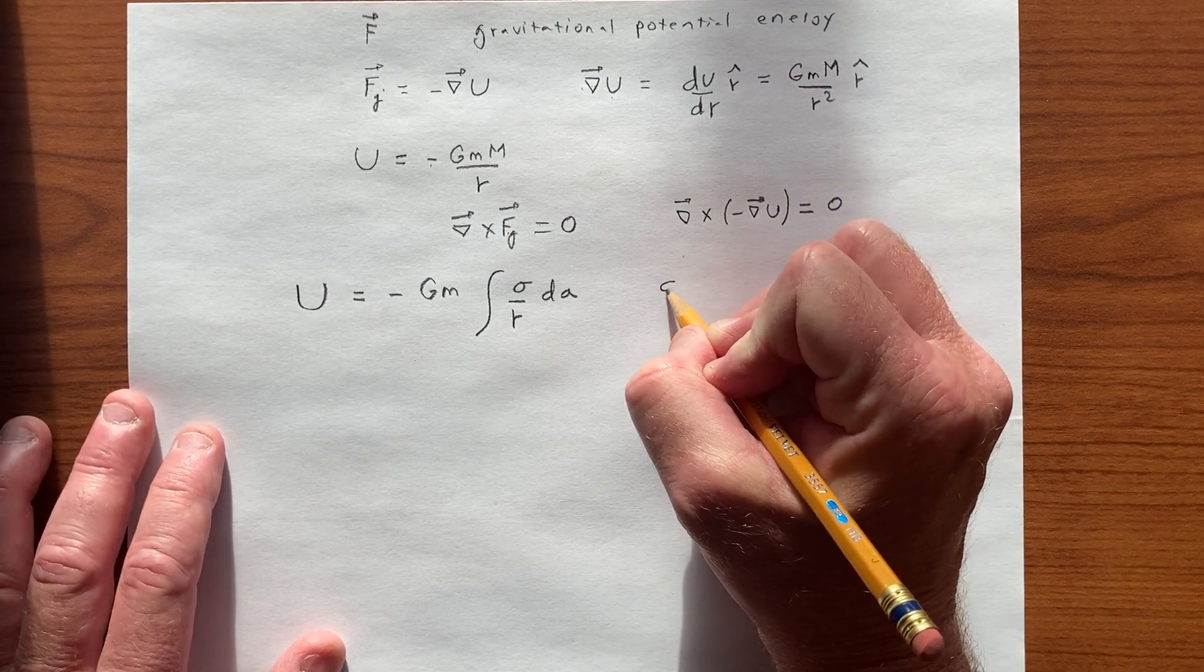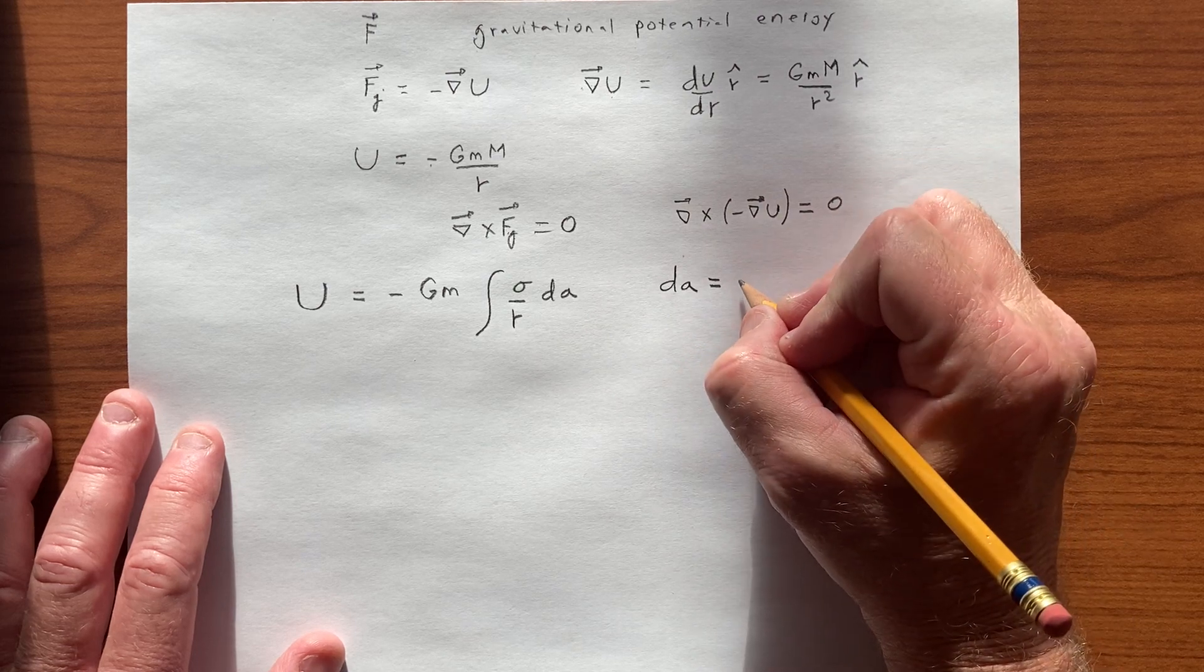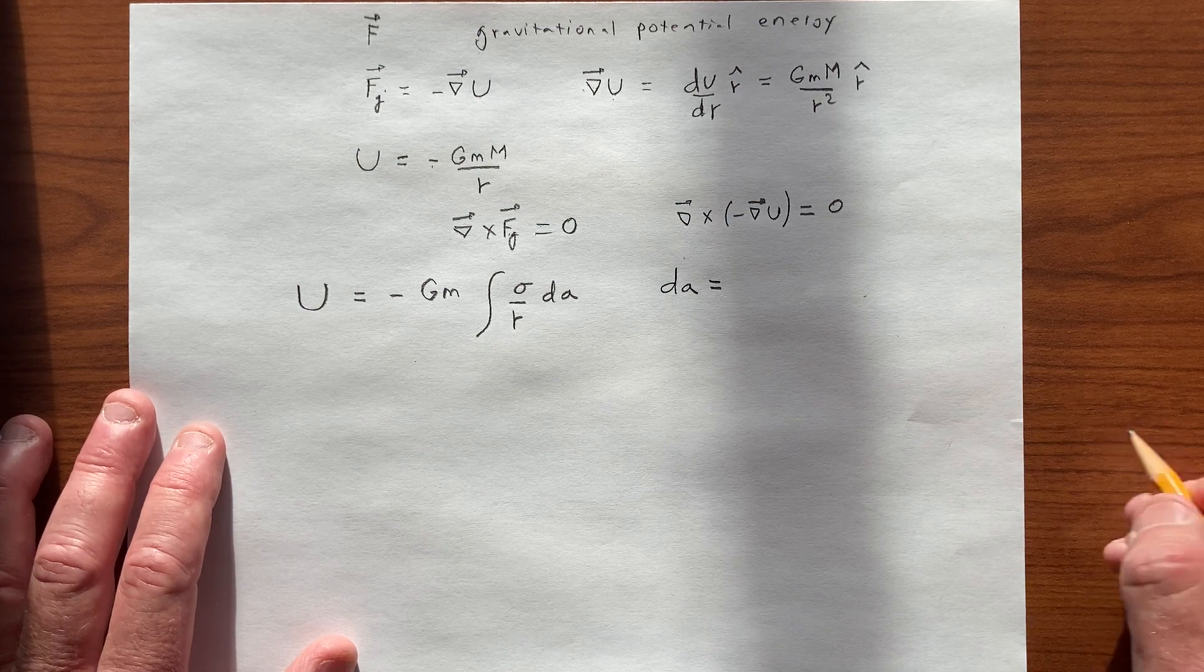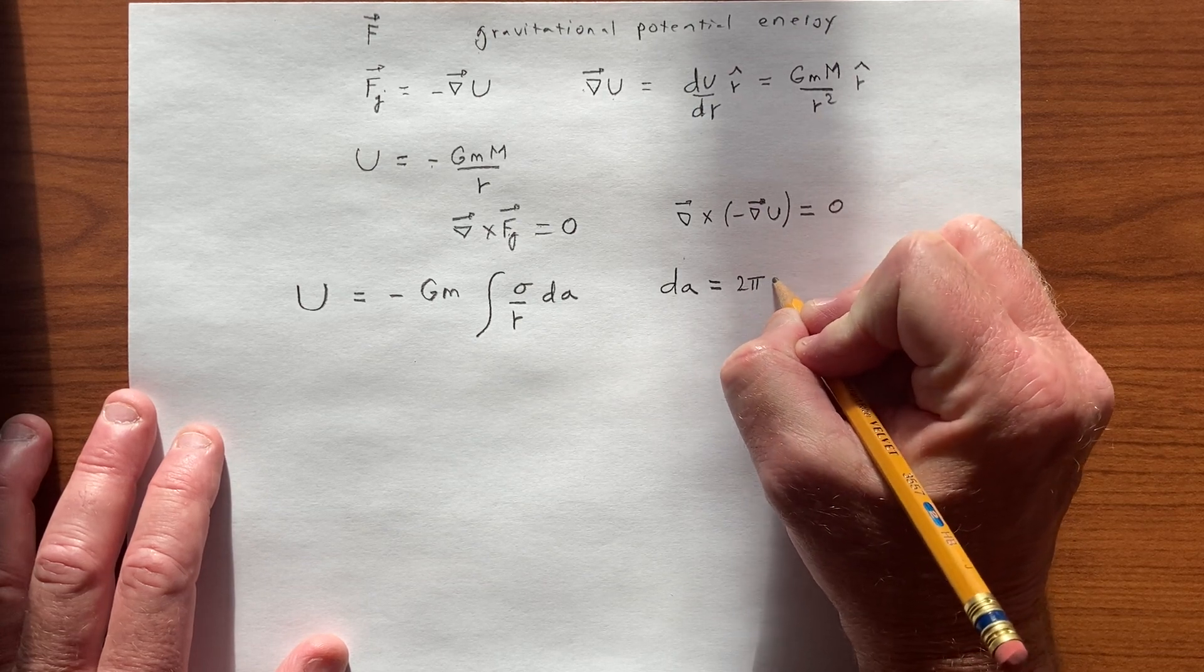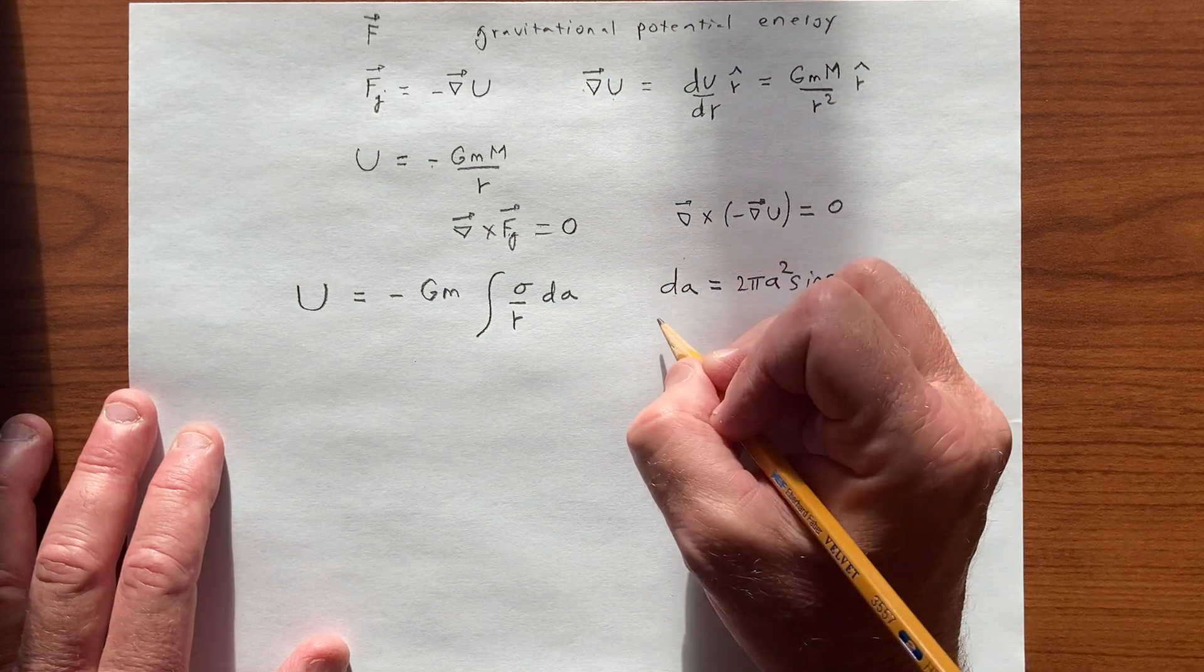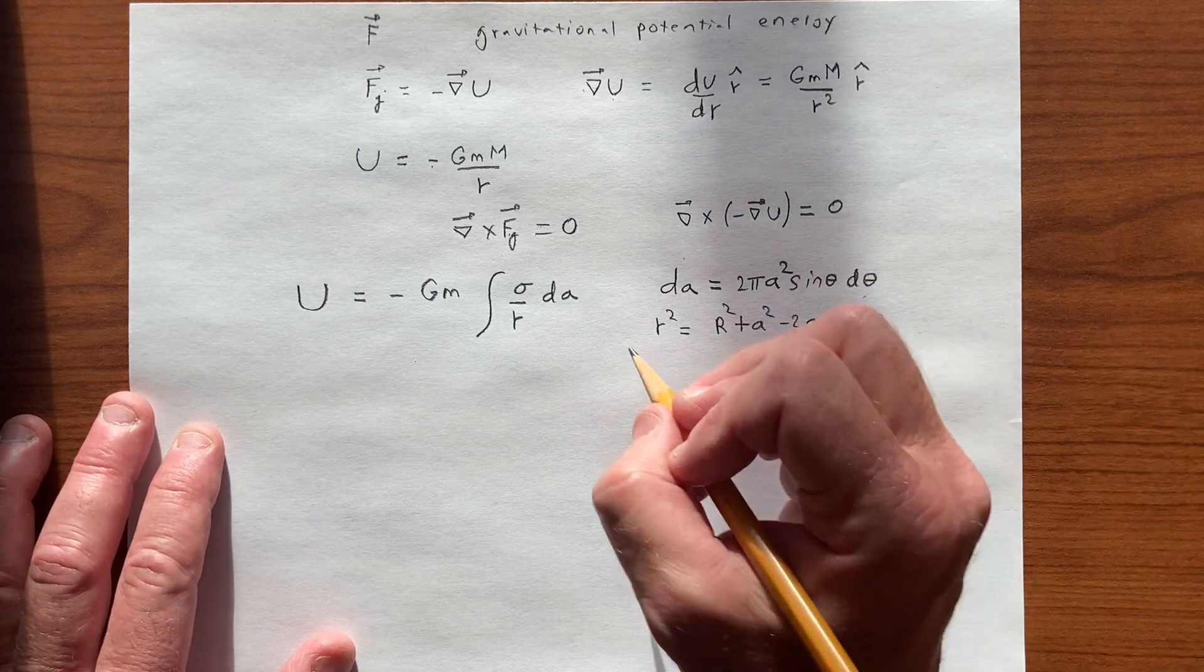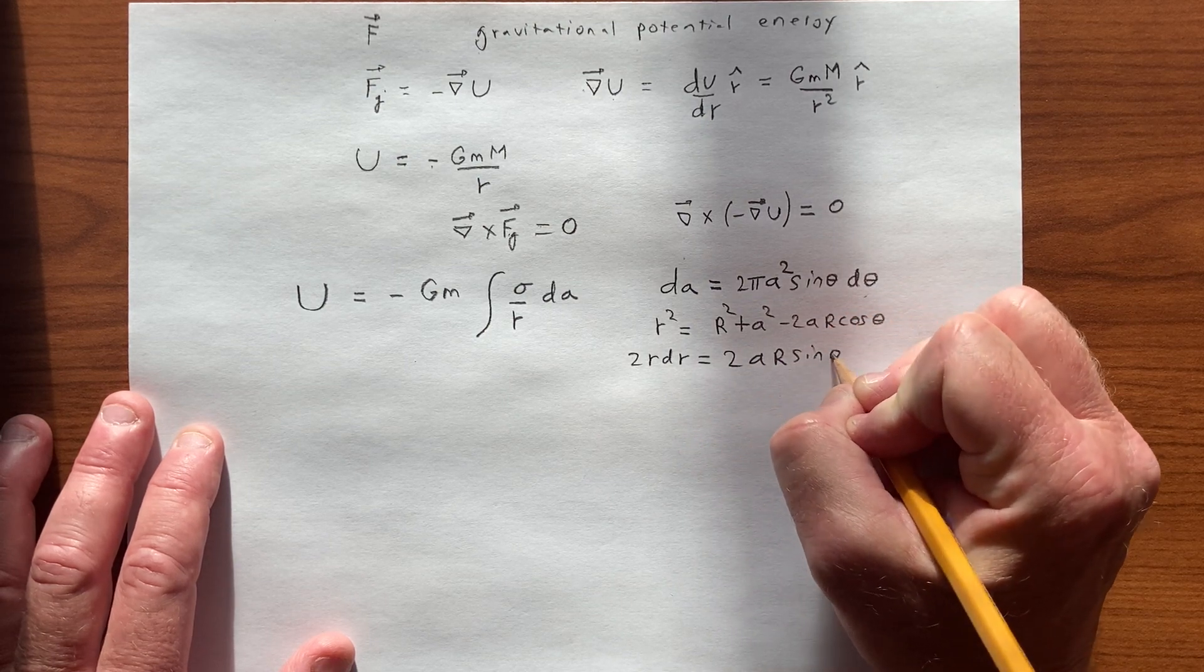And so we have, from the previous time we did this, we have the A is the surface element. Well, we actually wrote it dA. We're sort of abusing notation. This A is for the infinitesimal surface, and then there was an A for the radius of the spherical shell, and so we end up with the surface area is 2 pi times that radius squared, sine theta d theta. We had an r, a little r squared, which is r, capital R, squared plus the radius squared, minus 2 A r cosine of theta. And we know that we did the change of variable, which gave us 2 A r sine theta d theta.